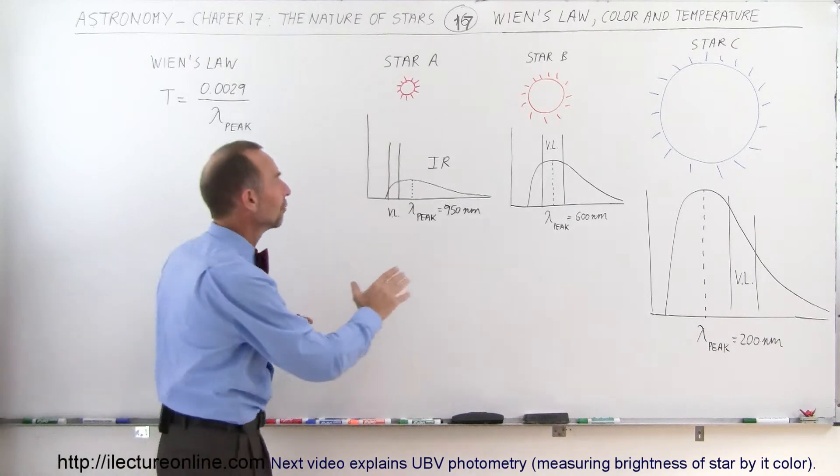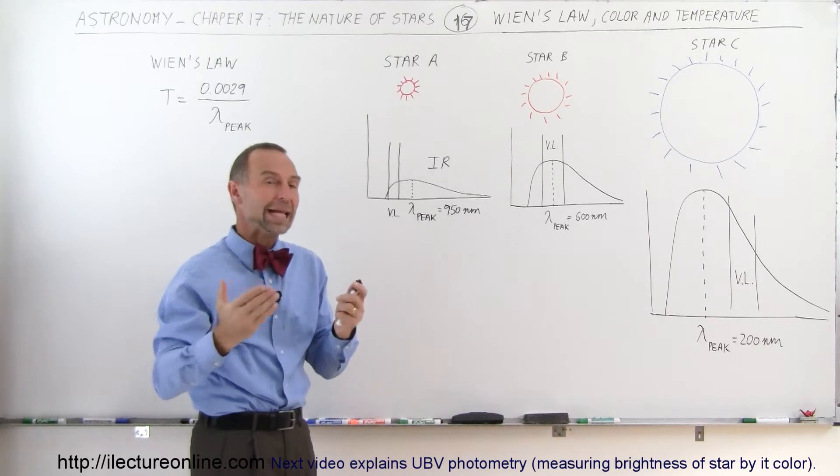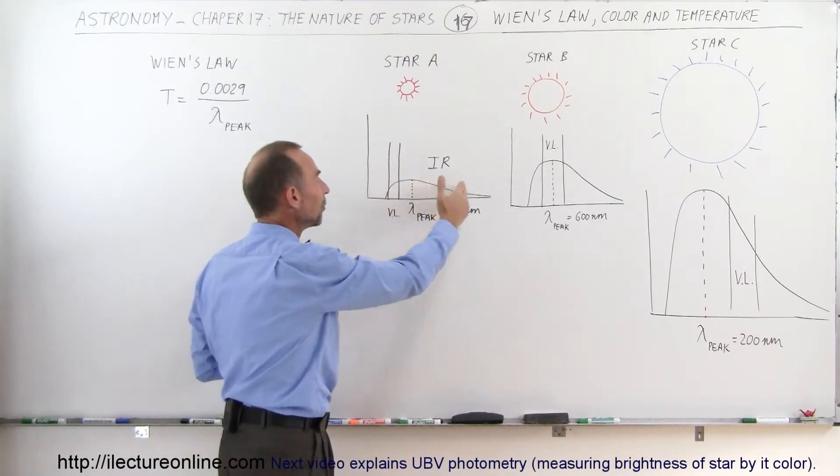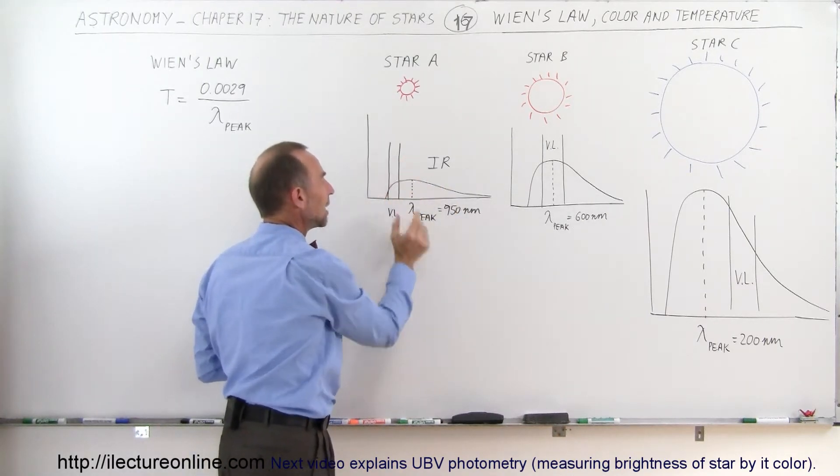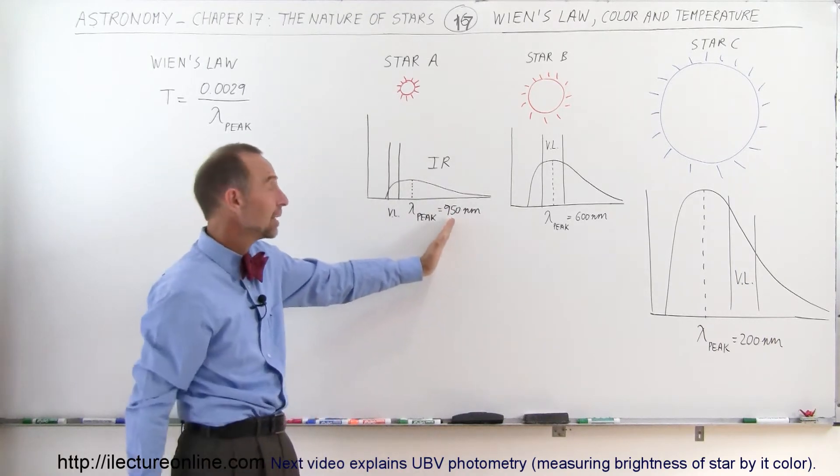When we look at the radiation curve from Star A, a very small red star, we find that the majority of radiation is emitted in the infrared band. The peak of the radiation occurs at much longer wavelengths, for example 950 nanometers.